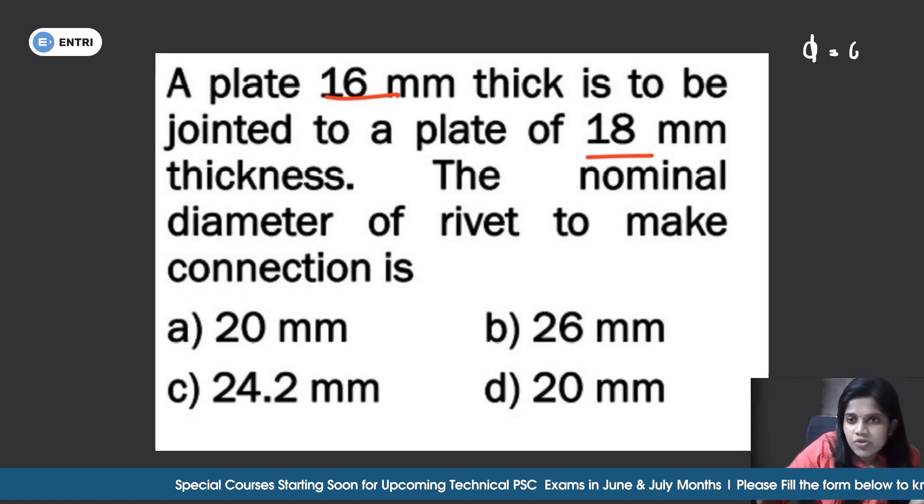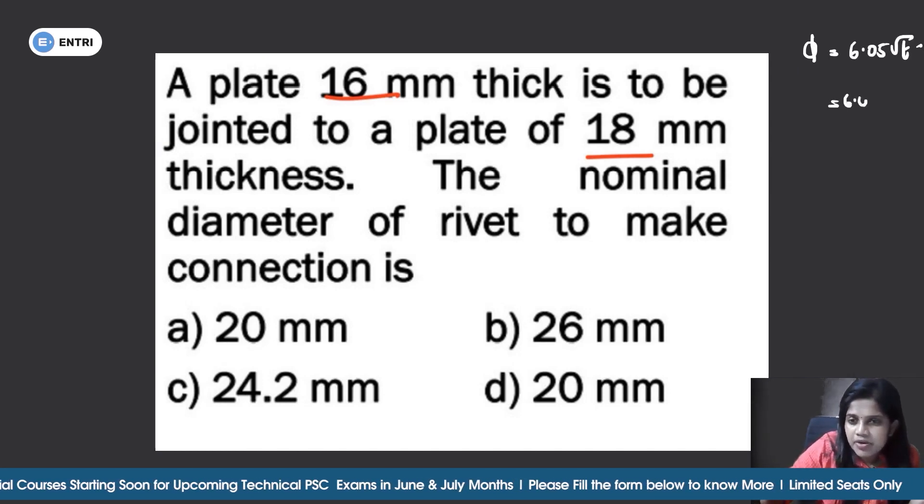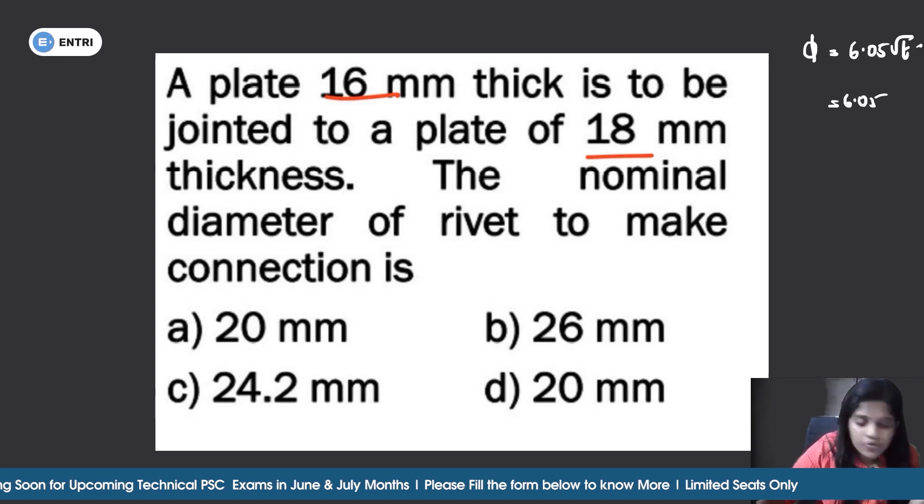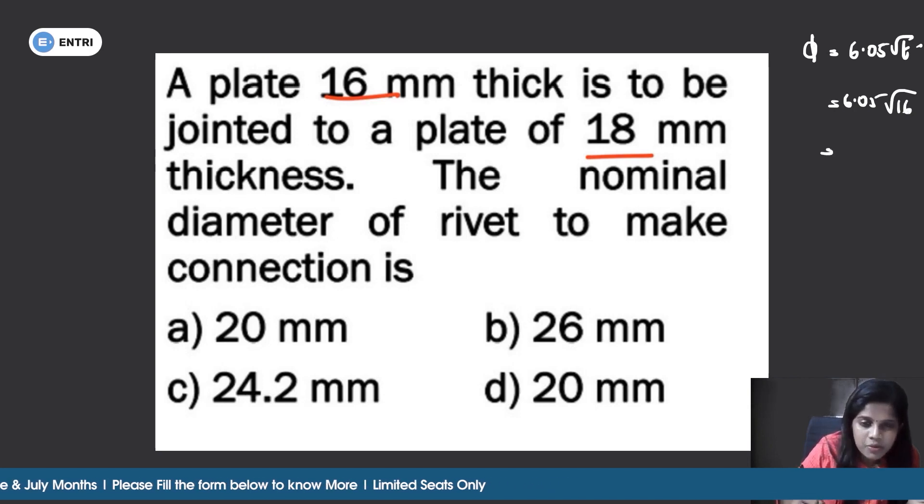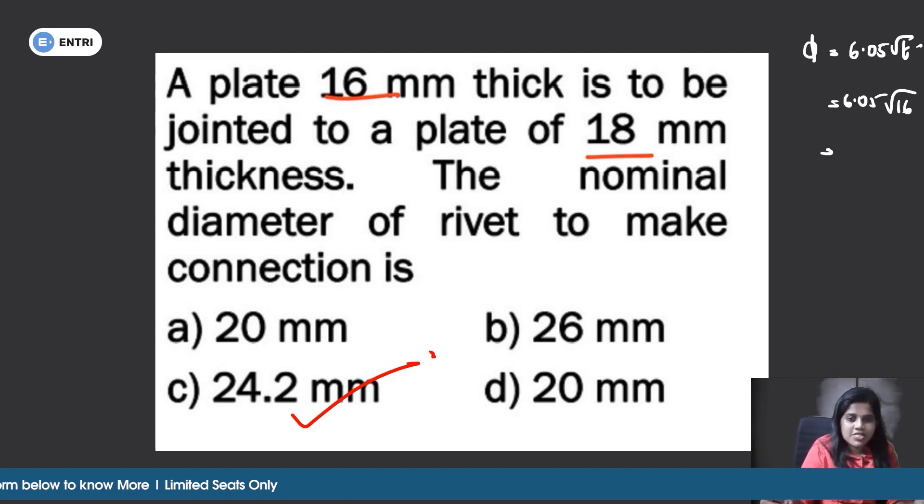Unwin's formula: 6.05 root T, that is 6.05 into root of 16 equals 24 point something. Option C, 24.2 mm diameter, nominal diameter of the rivet to make this type of connection.